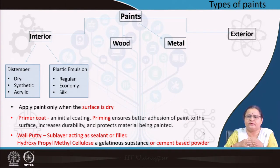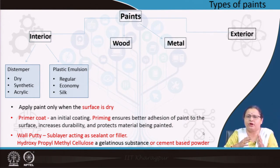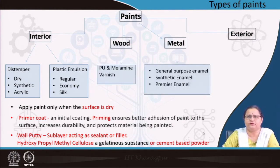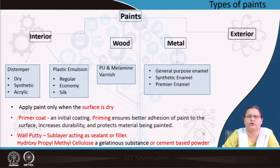Distempers are very basic, water-based paints. We have dry distemper, synthetic distemper, and acrylic distemper. For wood and metals, it is a different paint from what is applied on interior wall surfaces — it may be polyurethane, melamine, or varnish.